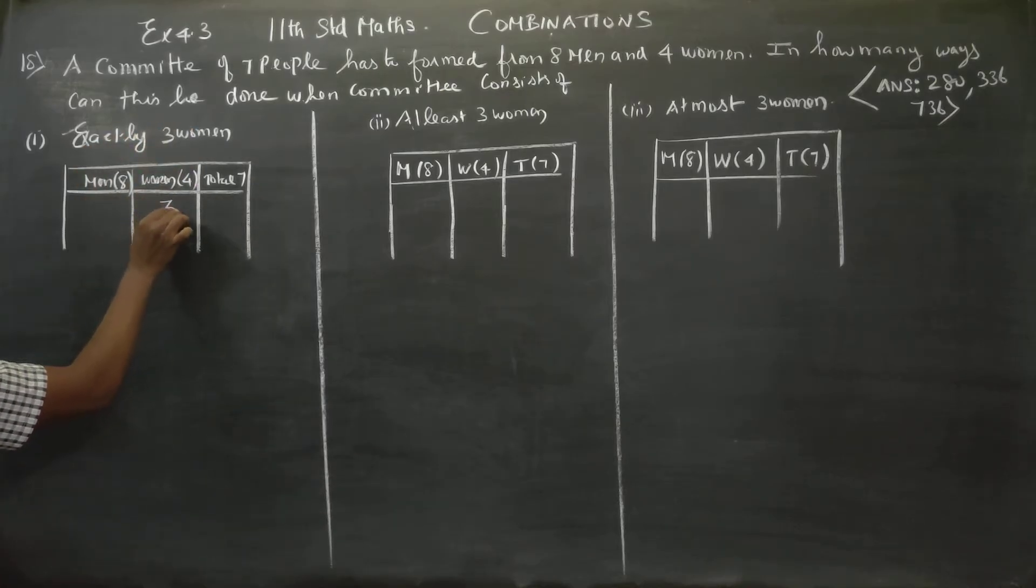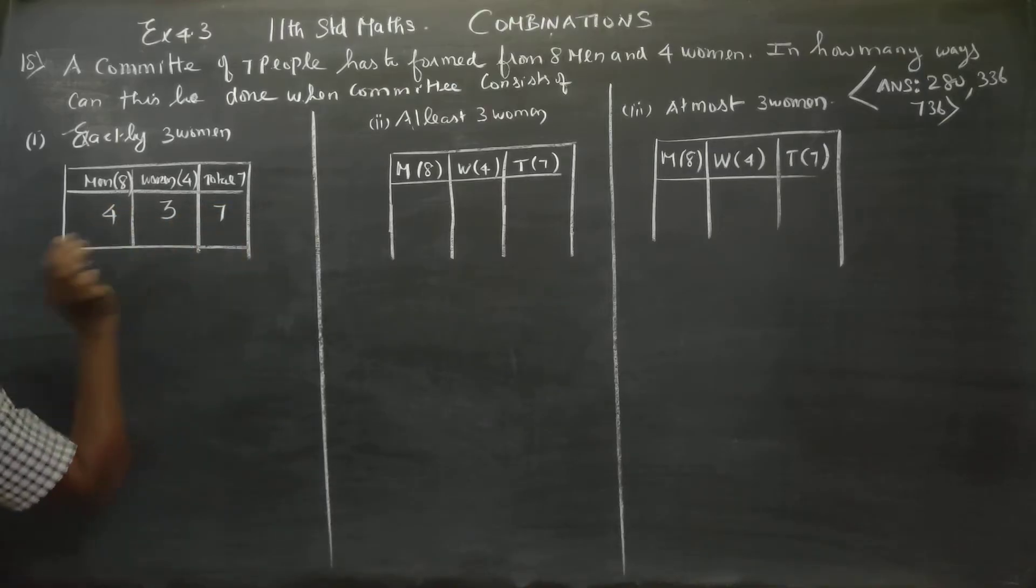Three women must be selected. If we have four women total and need three, and the total committee size is seven people, then we need four men. If there are eight men available, we select four. Four plus three equals seven. This is the basic approach.